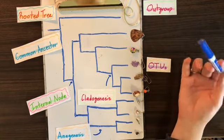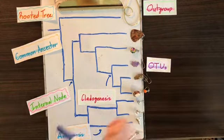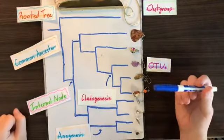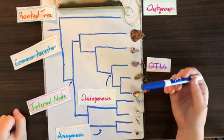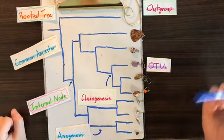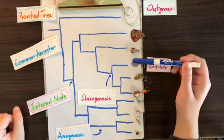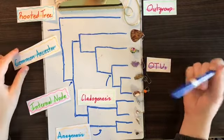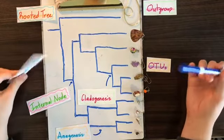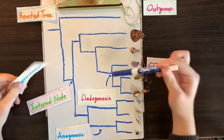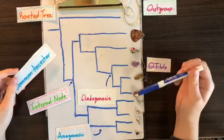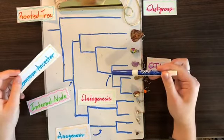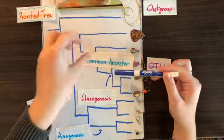Cladogenesis is usually pointed out at a point of divergence. We can also consider this point to be an internal node. At the internal nodes we can find most recent common ancestors. So for example, at this internal node right here, this includes three different earrings — as you can see they're all animals — so the most recent common ancestor of all three of these OTUs would be located right here.